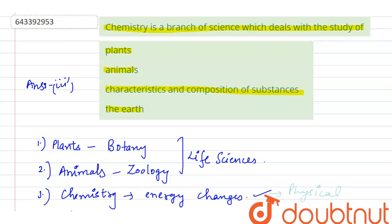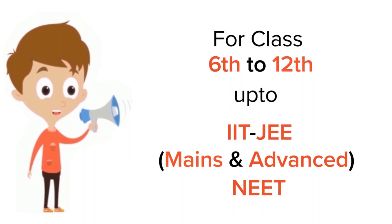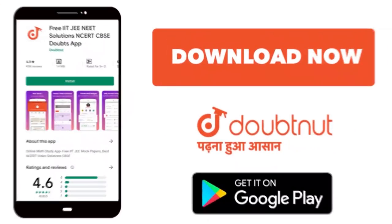characteristics and composition of substances. For class 6th to 12th, up to IIT-JEE Mains and Advanced and NEET level, trusted by more than 5 crore students. Download DoubtNet app today.